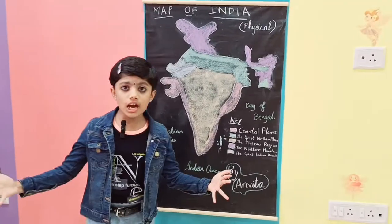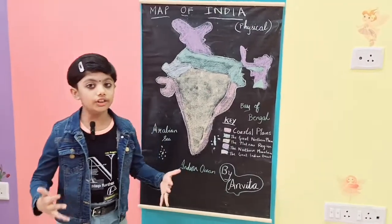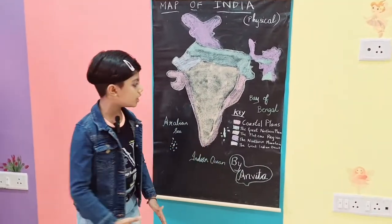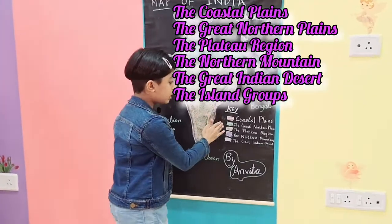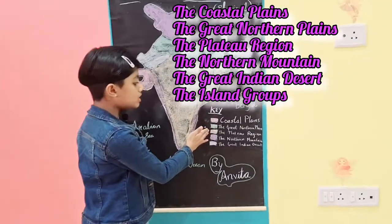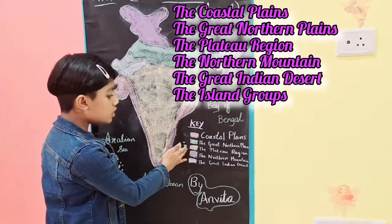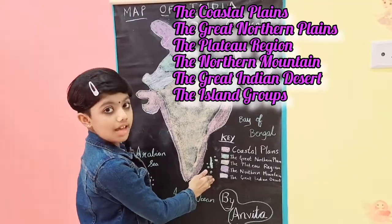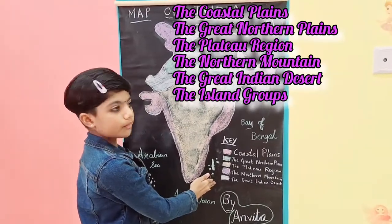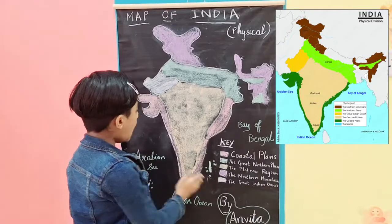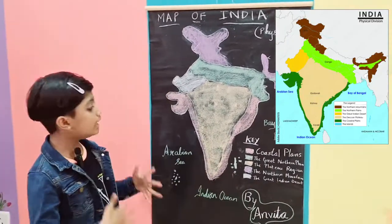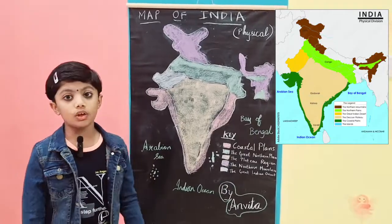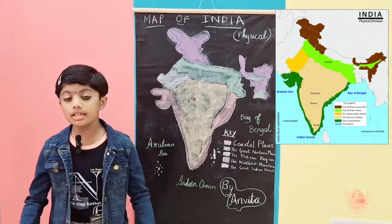The physical map of India is divided into six broad divisions: the coastal plains, the great northern plains, the plateau region, the northern mountains, and the great Indian desert. I have used a different color for each of the divisions so that y'all can understand it easily.